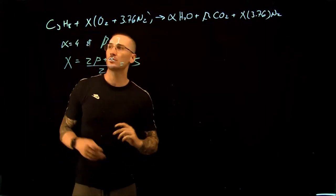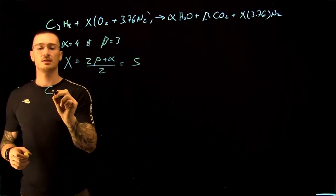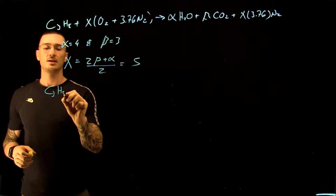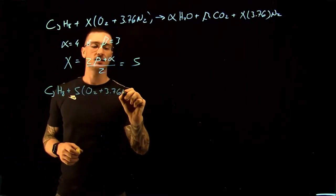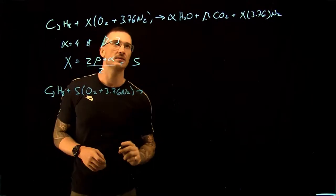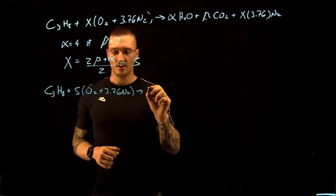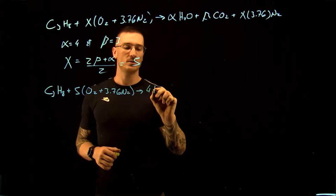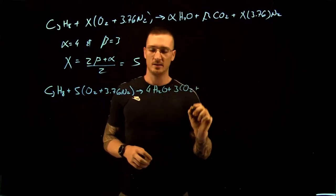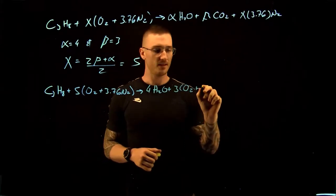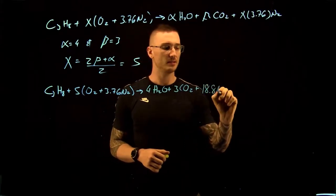So our stoichiometric reaction is C3H8 plus 5 O2 plus 3.76N2 is going to give us 4H2O plus 3CO2 plus 18.8N2.